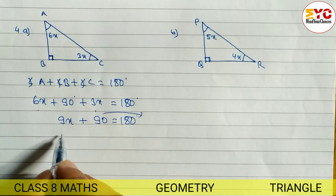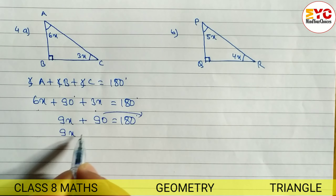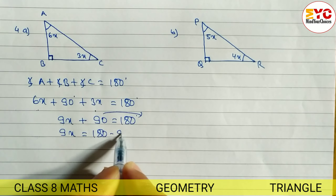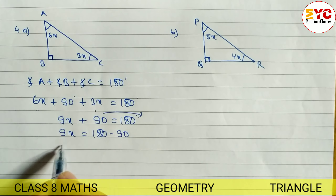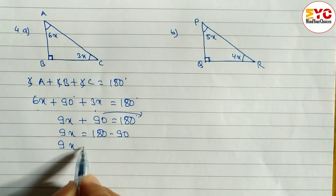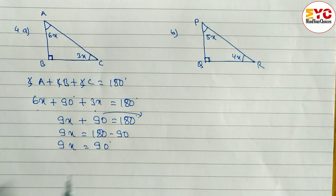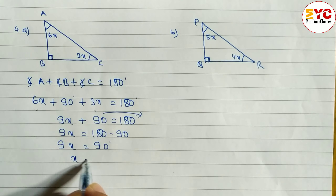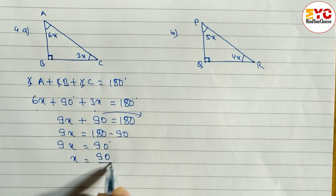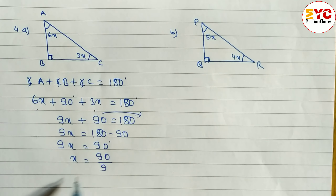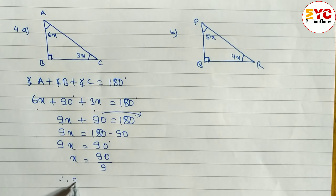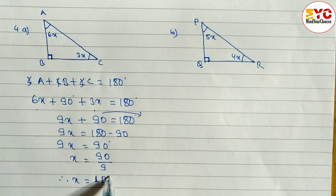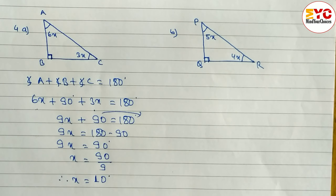We take 90 to the right side, so 9x is equal to 180 minus 90, which gives 9x equals 90. Since 9 is in multiplication, we divide: x is equal to 90 divided by 9, therefore x is equal to 10 degrees. Hope you understand this — question number 4a.